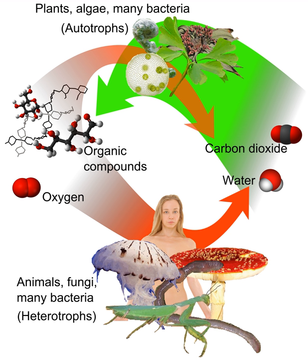A heterotroph — from ancient Greek 'heteros' meaning 'other' plus 'troph' meaning nutrition — is an organism that cannot produce its own food, relying instead on the intake of nutrition from other sources of organic carbon, mainly plant or animal matter.